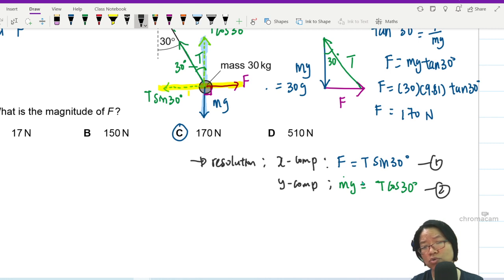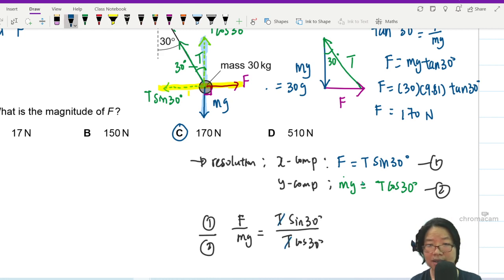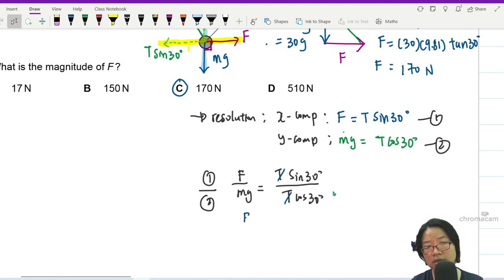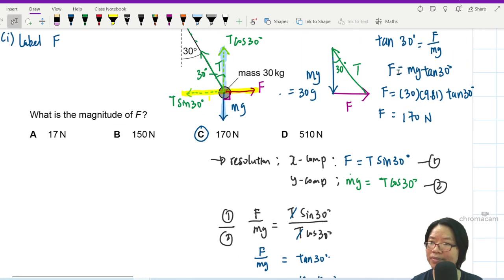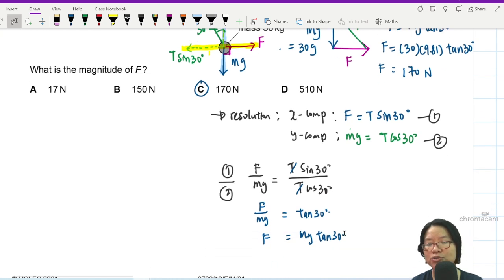So I look at these two equations and I think to myself, I don't want to find T. I don't care about T. I want to find F. So equation one, equation two, we will take one divided by two. So what I will have is F over mg is equal to T sine 30 over T cos 30. T and T can say bye-bye. Sine 30 over cos 30 will be tangent 30. F will be mg tangent 30. There, mg tangent 30. Look at the first method. F is mg tangent 30 here. F is mg tangent 30 there. So this one would also be 170.